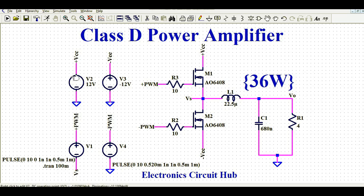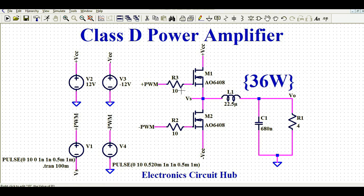Let us start with the positive supply VCC, which is 12 volts, and the negative supply, which I called minus-VE, that is minus 12 volts. This is a half-bridge topology. You can see two MOSFETs connected together — this is N-channel MOSFET M1 with part number AO6408, and M2 is also the same N-channel MOSFET. The source of M1 is connected to the drain of M2, the drain of M1 is connected to the positive supply, and the source of M2 is connected to the negative supply of minus 12 volts.